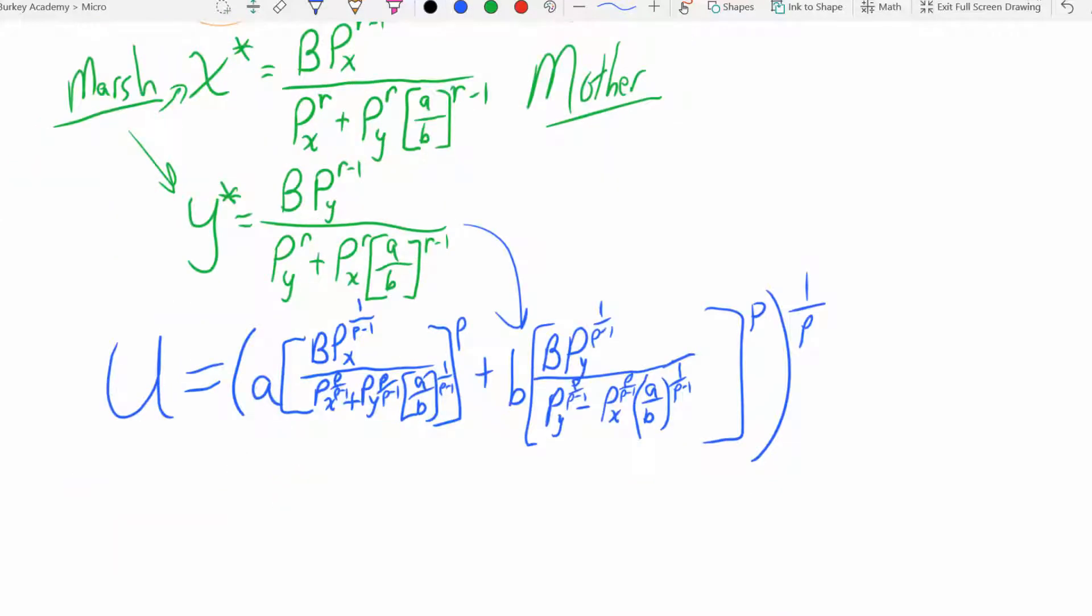All right, so there's what we got. Now let's do some simplification. First thing, I'm kind of sick of carrying these a over b parameters around. Let's nuke those. Let's just assume those are equal to one. I like that better already.